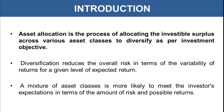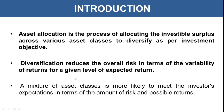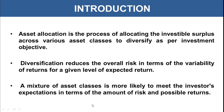If you have to do investment, you must diversify your investable amount among different asset classes, so that if any one particular asset class does not perform well, your money in other asset classes may be giving you returns at that period of time. That is the main benefit of diversification provided through asset allocation, and this should be done according to your investment objective. Diversification reduces the overall risk in terms of variability of returns for a given level of expected return.